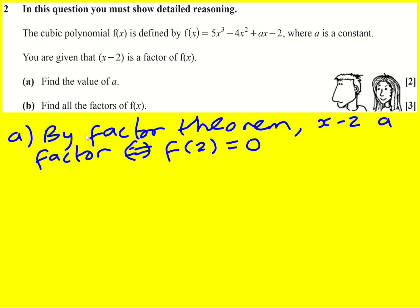So all we need to do now is stick two in. So f of 2 is going to be 5 times 2 cubed minus 4 times 2 squared plus 2a minus 2, and that's equal to 0.